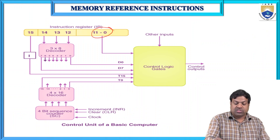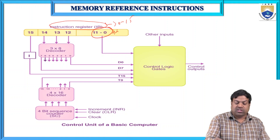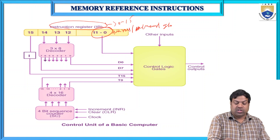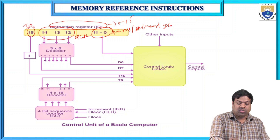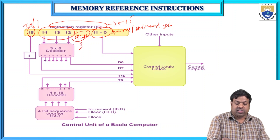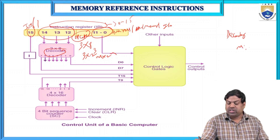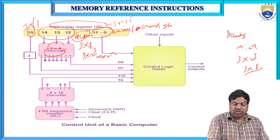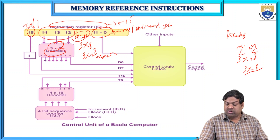The instruction register IR is 16 bits (0 to 15). Bits 0 to 11 hold address, data, memory, or I/O information. Bits 12–14 are the opcode, and bit 15 is i = 0 or i = 1. With a 3-bit opcode, we use a 3-to-8 decoder (n to 2^n, giving 8 outputs D0–D7), connected to control logic gates along with a clock pulse.